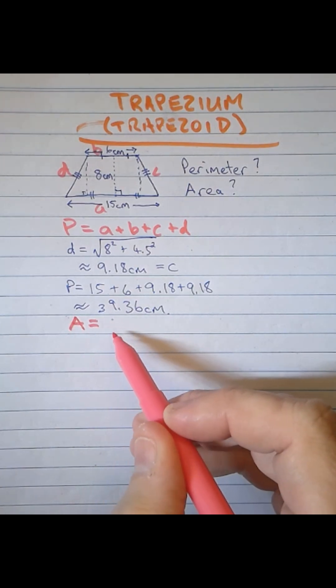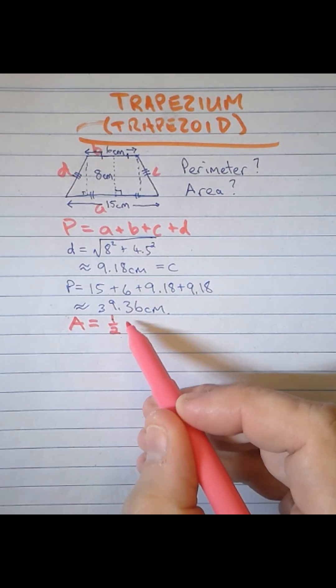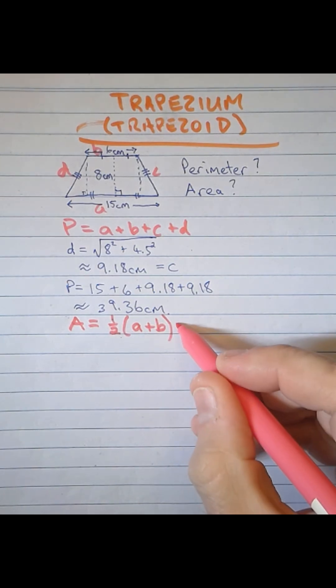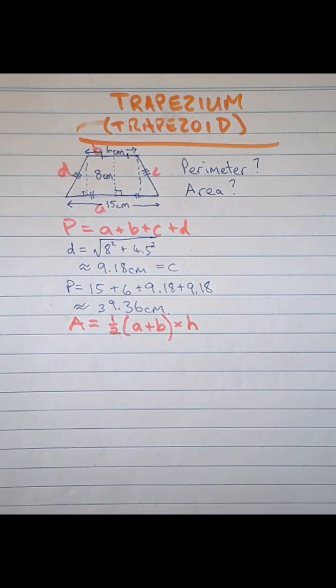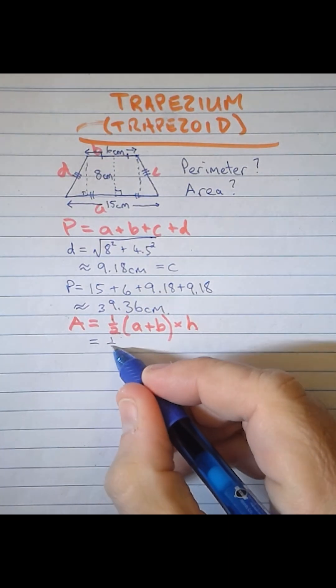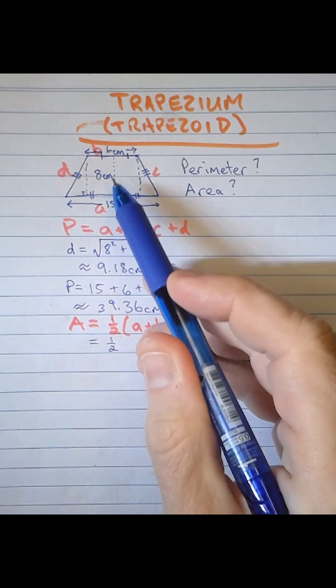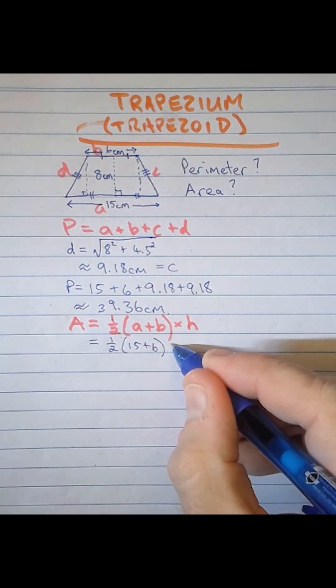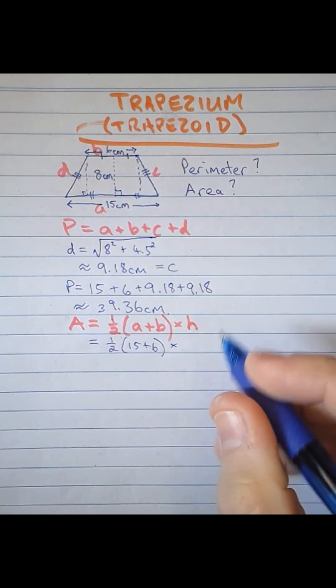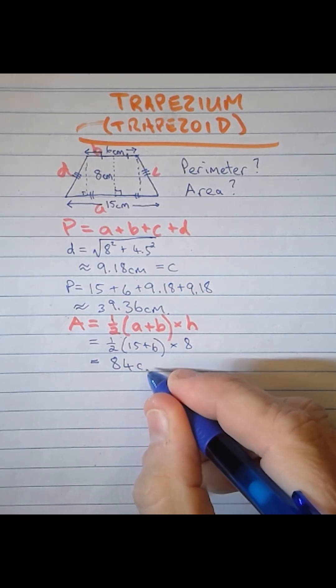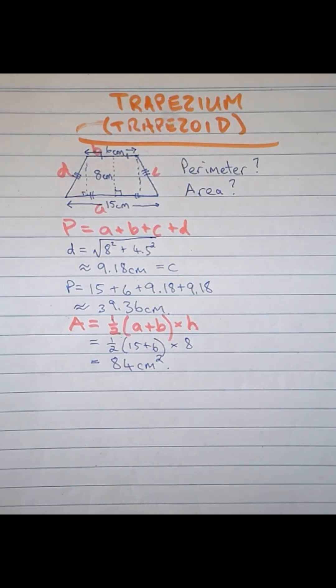The area of the trapezium is given by one half of the sum of the parallel side lengths multiplied by the perpendicular height. We already have all of these values, so we can go straight ahead and plug those in. One half of A plus B, or 15 plus 6, multiplied by the perpendicular height, which is 8cm. And this gives us 84 square centimeters, the area of the trapezium.